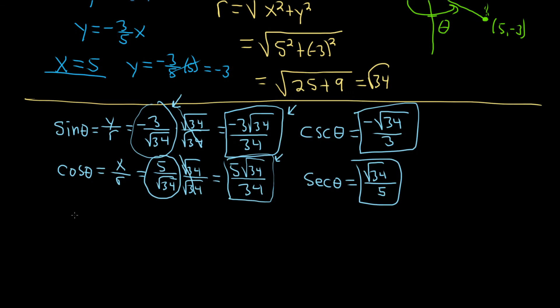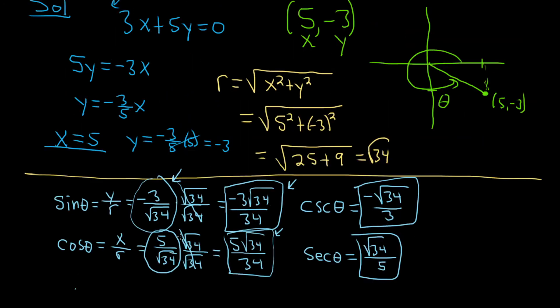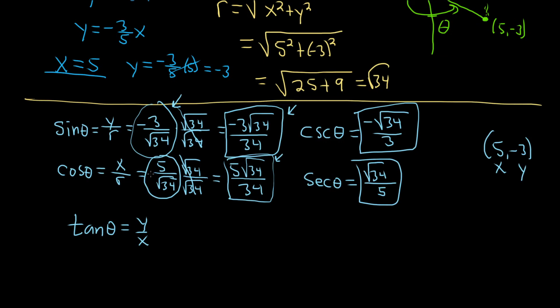Almost done. Now we just got to do tangent. So the tangent of theta is equal to y over x. So our ordered pair was 5, negative 3. That means x is 5 and y is negative 3. So y over x, that would simply be negative 3 over 5. That would be the tangent of theta. And the reciprocal of tangent is cotangent. So cotangent of theta, you would just flip it. So you would get negative 5 over 3. That would be the final answer. I hope this video has been helpful.